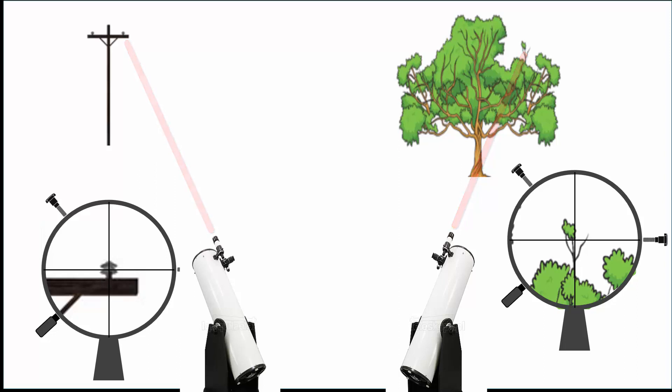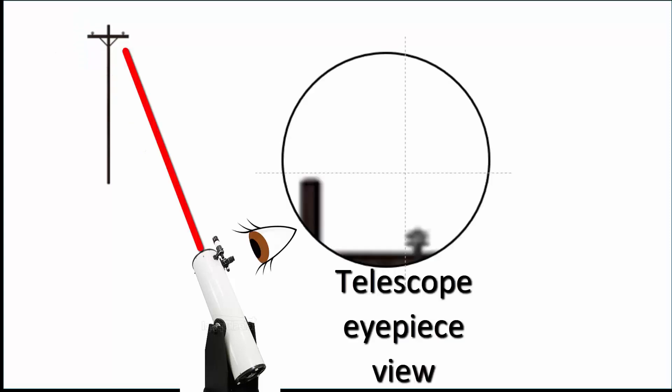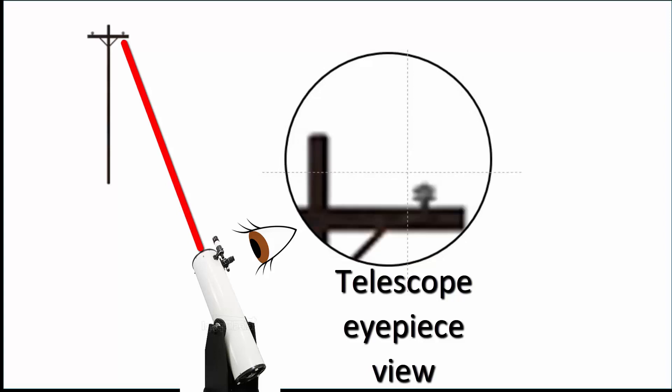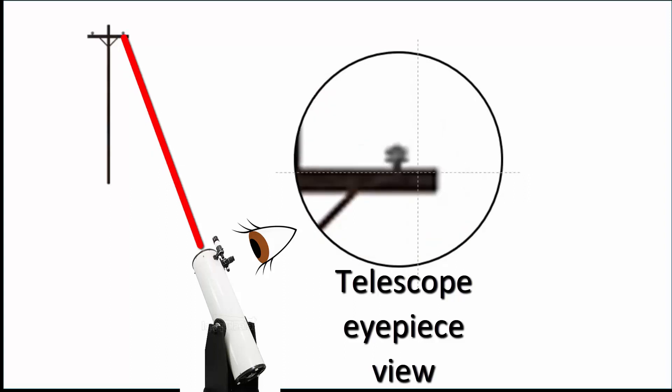However, your main telescope may or may not be also pointed at your target. Now look through the eyepiece on the main telescope and even more gently nudge the main telescope up, down, left, or right until you see your alignment target pole or tree. Now gently center the tip of the pole or a distinctive tree branch into the very center of the field of view of the telescope eyepiece.